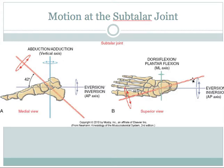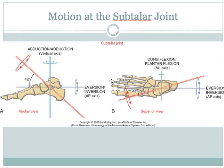Looking at the axis orientation from a superior transverse view, we can see it is not only deviated in the sagittal plane but also deviated medially 16 degrees. Because of that, there is a slight amount of dorsiflexion-plantar flexion that occurs, but the majority of motion due to axis orientation is some combination of eversion-inversion and abduction-adduction. In the superior view, the axis orientation is very close to directly anterior-posterior, therefore giving us a lot of eversion-inversion motion.